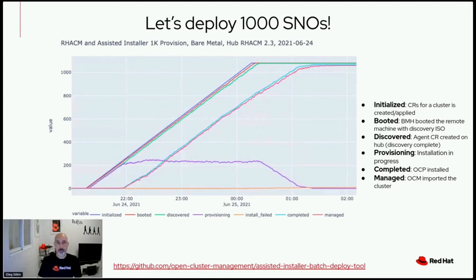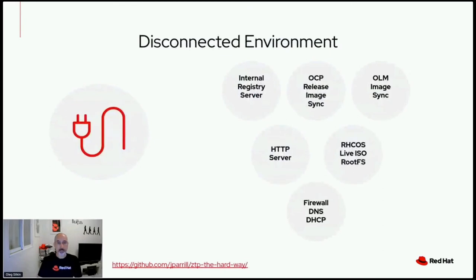A lot of performance improvements were done to achieve this milestone. Private data centers are mostly disconnected from the internet for security reasons. The components required for a disconnected setup include an internal registry server to mirror the OCP release and OLM containers, an HTTP server to host the RHCOS live ISO and rootFS needed by the Assisted Installer to create the discovery ISO, and networking configuration including firewall rules with DNS and DHCP properly configured. Exact steps are available in the linked repository.